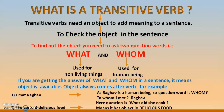Object always comes after the verb. For example: 'I met Raghav.' Here, 'I' is the subject, 'met' is the verb, and 'Raghav' is the object. If I say only 'I met,' it's not clear. I have to add 'Raghav' — 'I met Raghav' or 'I met my friend.' It means the object is necessary.